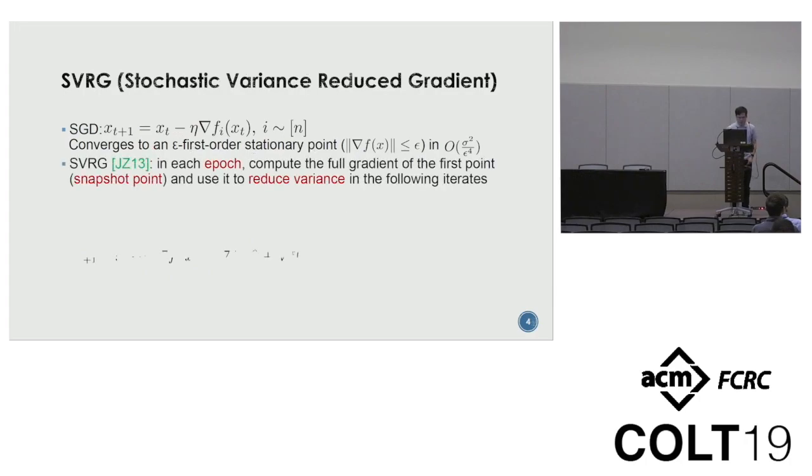One popular method to solve the optimization problem is SGD. In SGD, we compute the stochastic gradient in each step. The stochastic gradient corresponds to the gradient of one individual function in our setting. We know SGD can converge to an epsilon first-order stationary point within O(sigma squared over epsilon to the fourth). Here, epsilon first-order stationary point means the gradient norm is upper bounded by epsilon, and sigma squared is a variance bound on the stochastic gradient. As you can see, if sigma squared is large, this bound can be very bad.